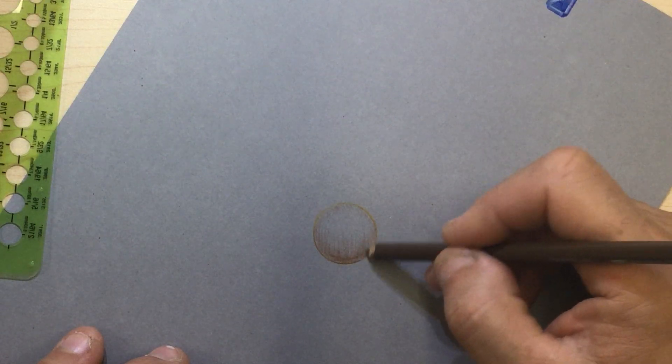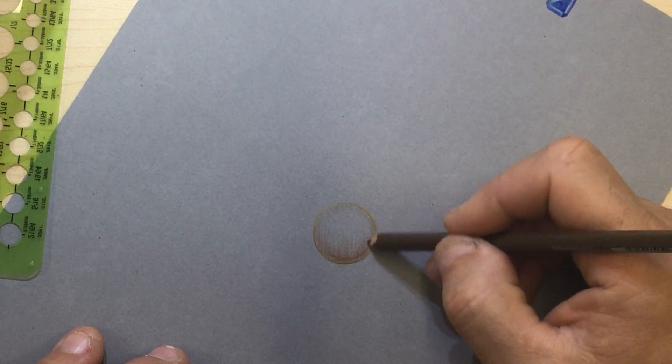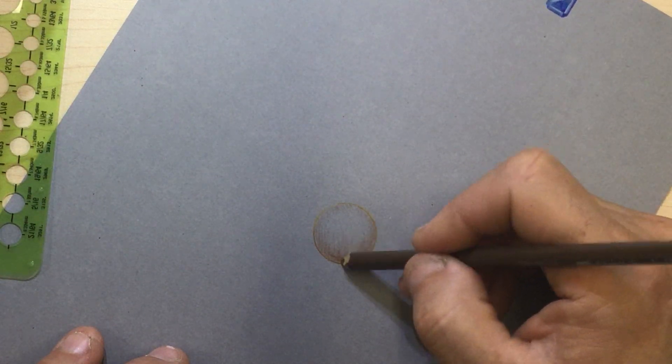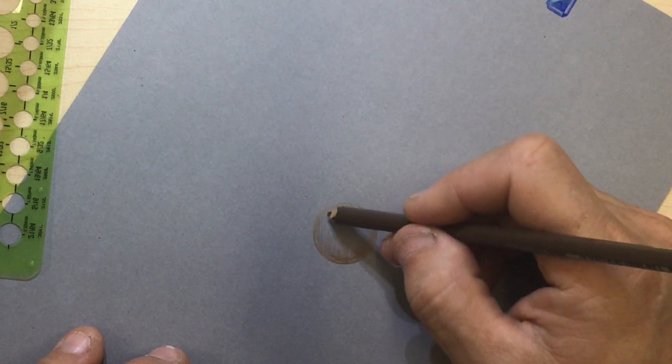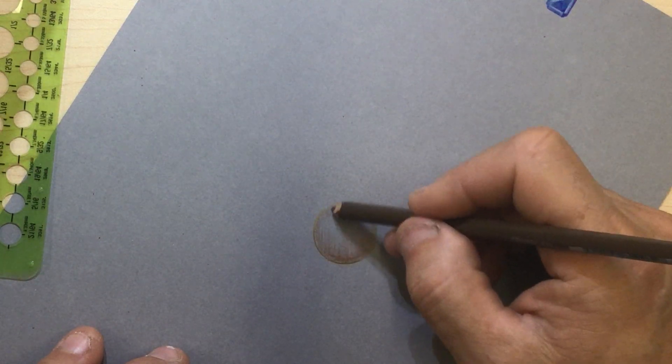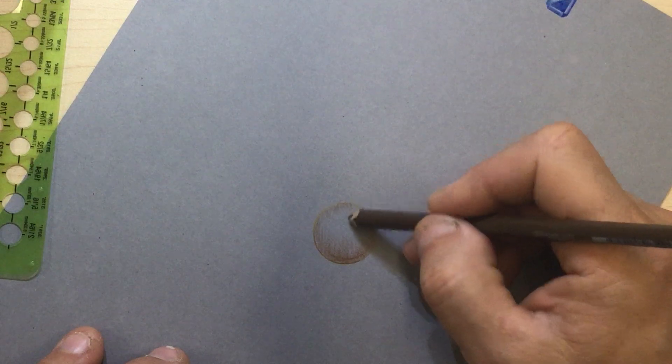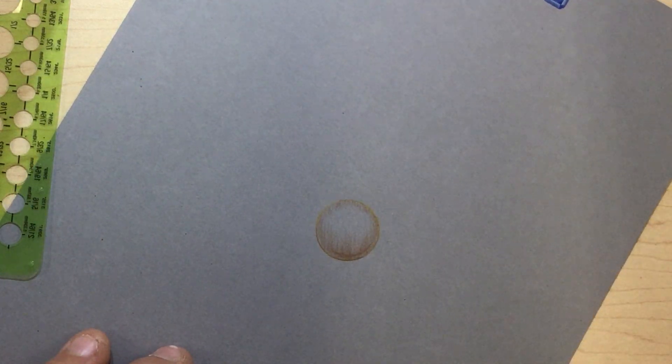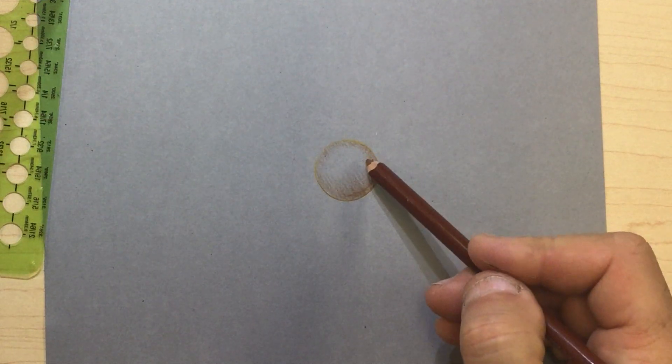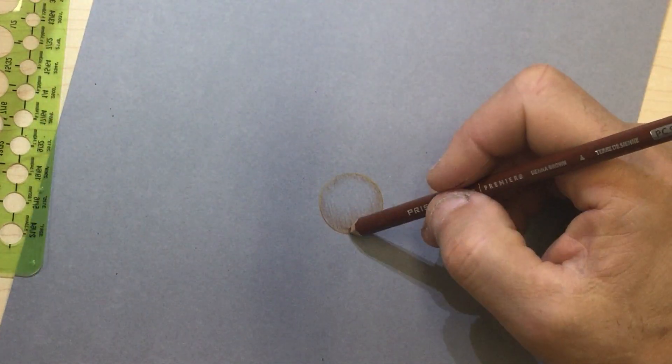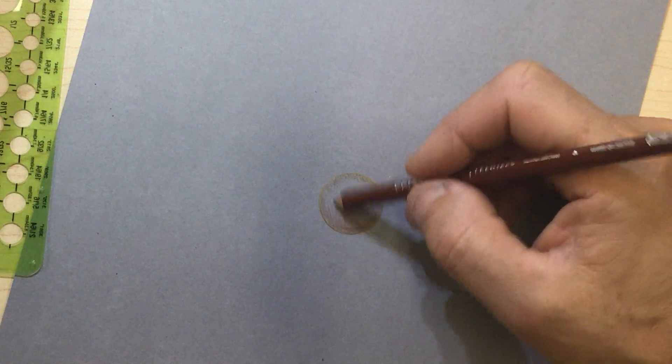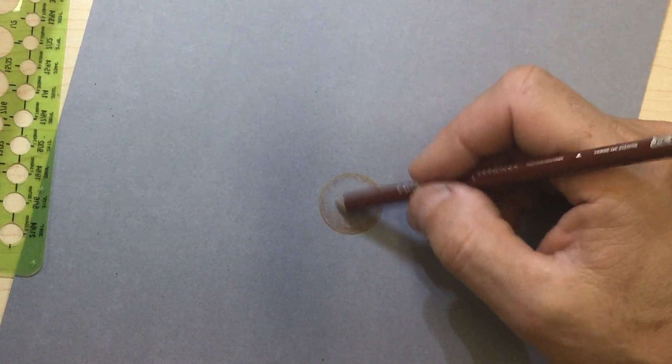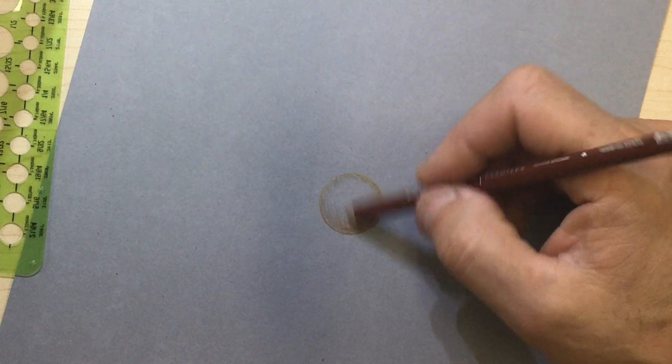If I don't add enough tone, everything is going to look flat. And I want to build up light layers on everything. Now I can see that I actually kind of want it to come forward a bit more. So I'm going back to my Sienna.